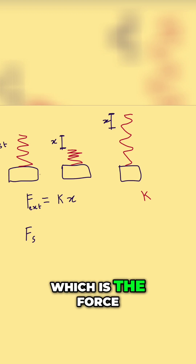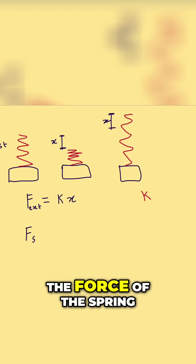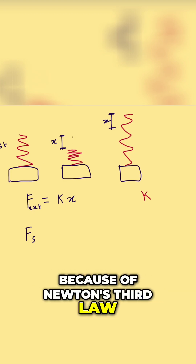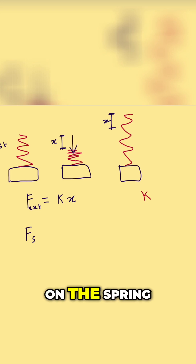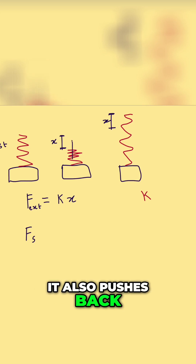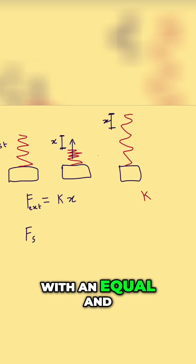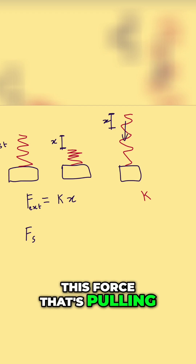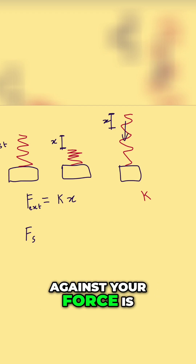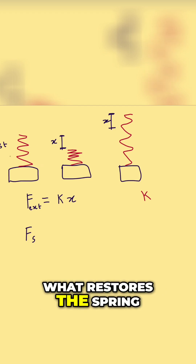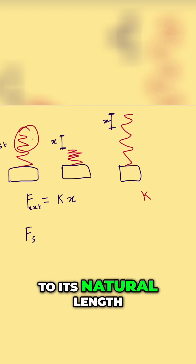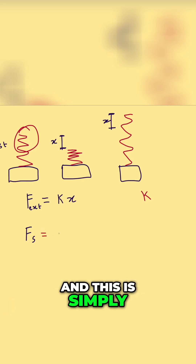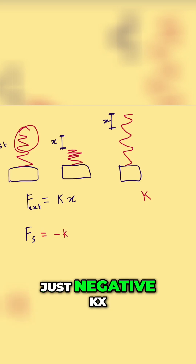There's another force called the restoring force, labeled fs — the force of the spring. Because of Newton's third law, when you push down on the spring, it pushes back with an equal and opposite reaction. This force that pulls against your force is what restores the spring to its natural length after you let go, and it is simply negative kx.